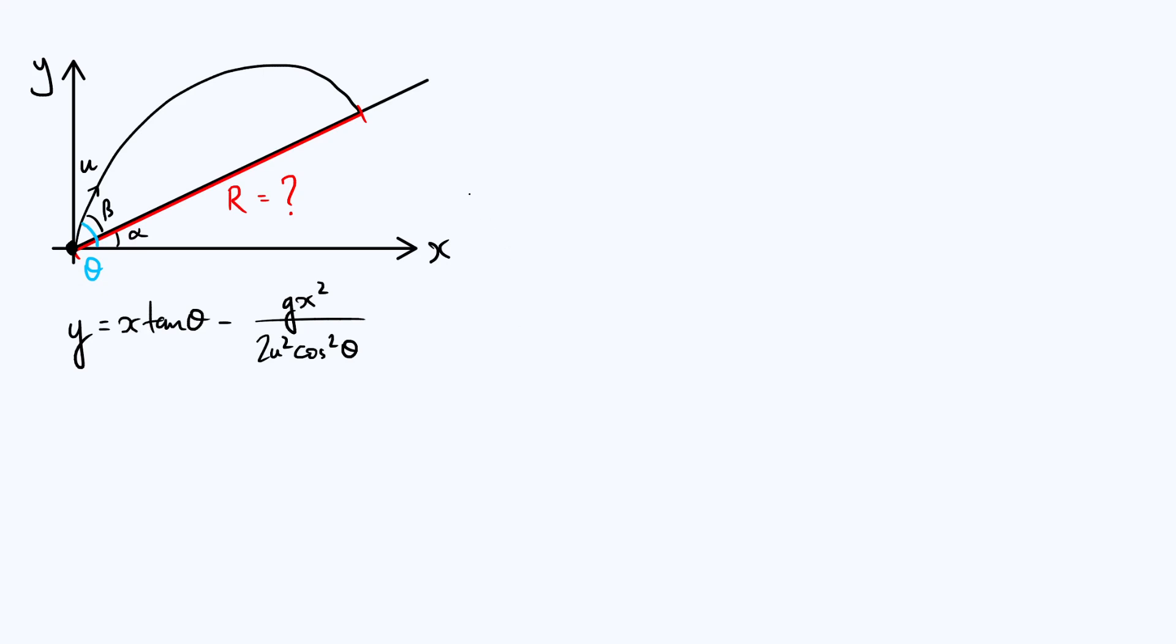So if we're trying to determine r using this equation, if we call this point P the point where our projectile hits the inclined plane, then the first thing we really need to know is the coordinates of P. That comes down to finding the intersection of a curve and a line—the intersection of the trajectory with the inclined plane itself. We already have an equation for the trajectory, so we just need to come up with an equation for the inclined plane.